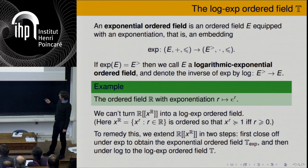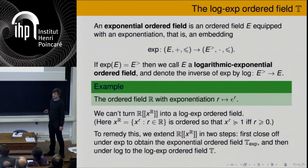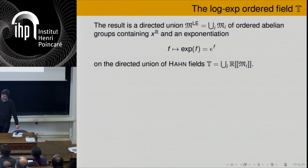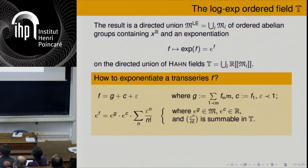To remedy this, one constructs T by extending this small Hahn field into a very large log-exp ordered field T, in two steps. First, you close off under exp, which gives the exponential ordered field T_exp, also known as exponential transseries. Then you close off under logarithms, since the exponential map is not onto on T_exp. The result is a directed union of ordered abelian groups starting with x^r, together with an exponentiation map on the corresponding directed union of Hahn fields.